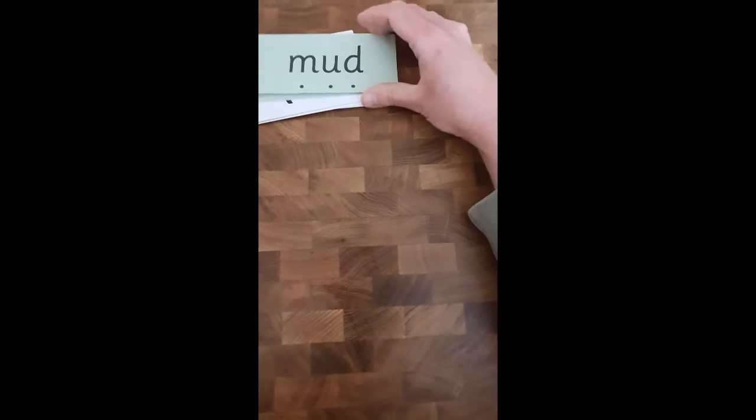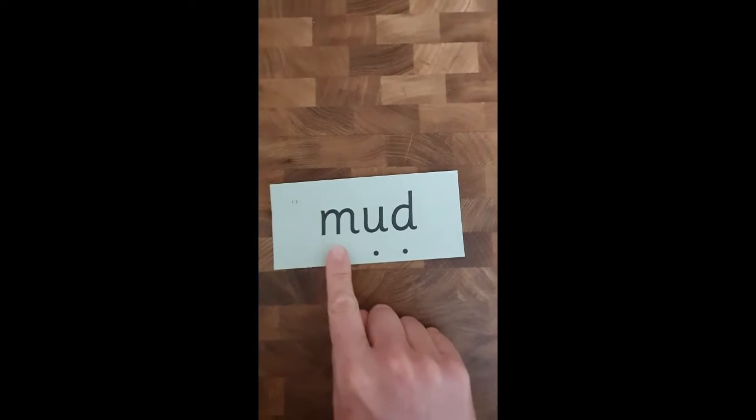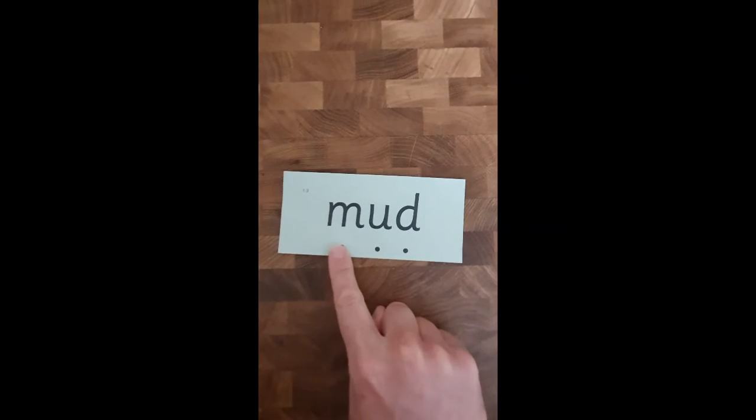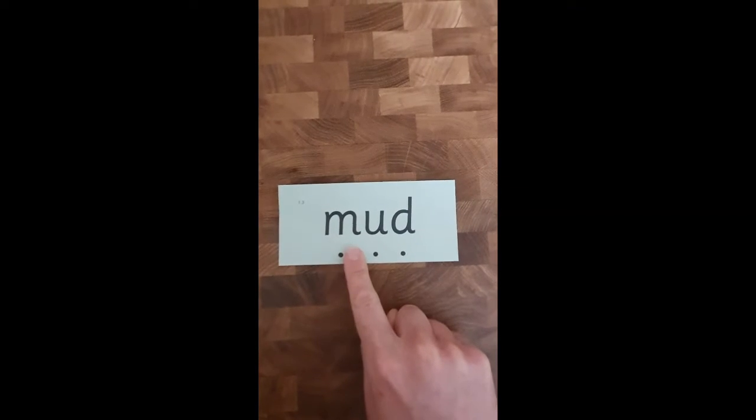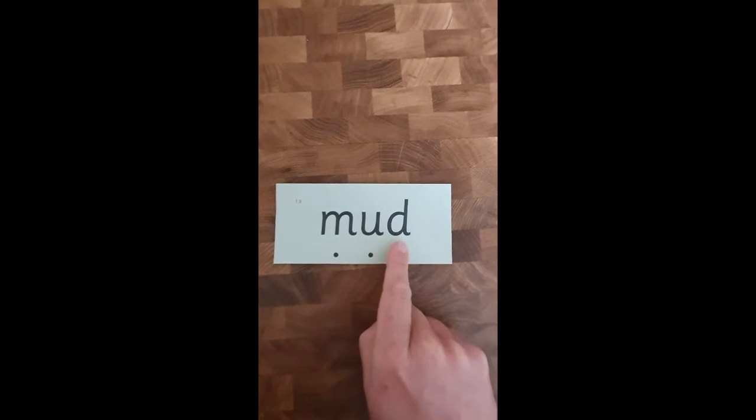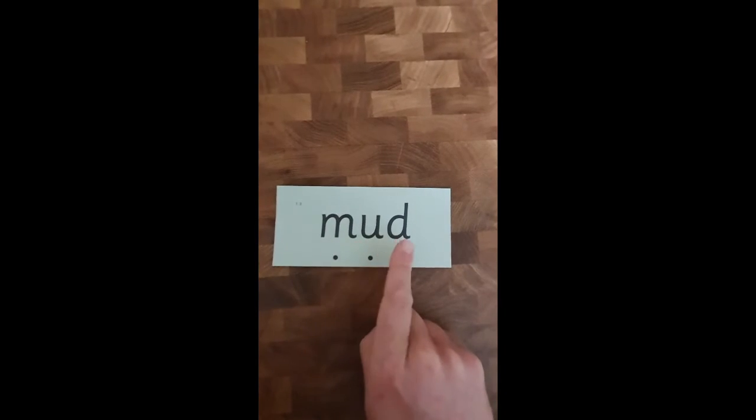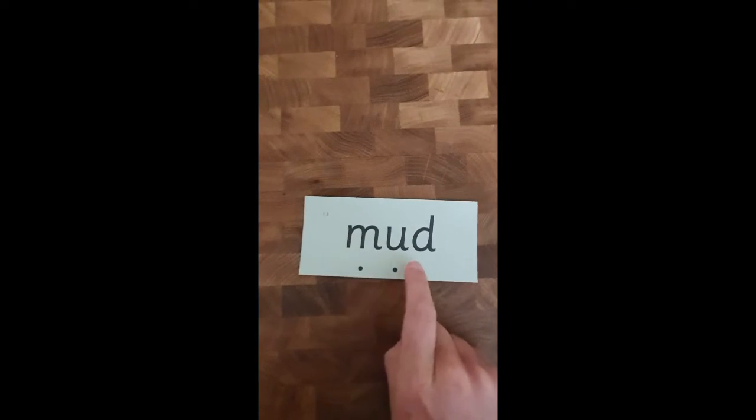So I've got a couple of words here. Our first one: my turn, mm-uh-d, your turn. And let's do it together, off we go, mm-uh-d. My turn, I'm going to blend it now: mm-uh-d, mud. Your turn, mm-uh-d, mud. Well done.